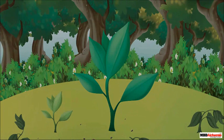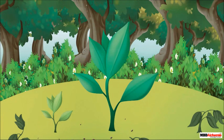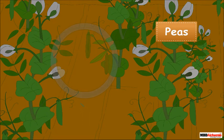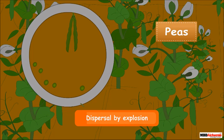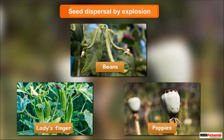Now you know what seed dispersal is and how important it is. The next question is how it occurs. Seeds of some plants like pea, when dry, explode and disperse on their own. This method of dispersal is known as dispersal by explosion. Beans, ladies' fingers and poppies are other examples of plants whose seeds are dispersed by explosion.